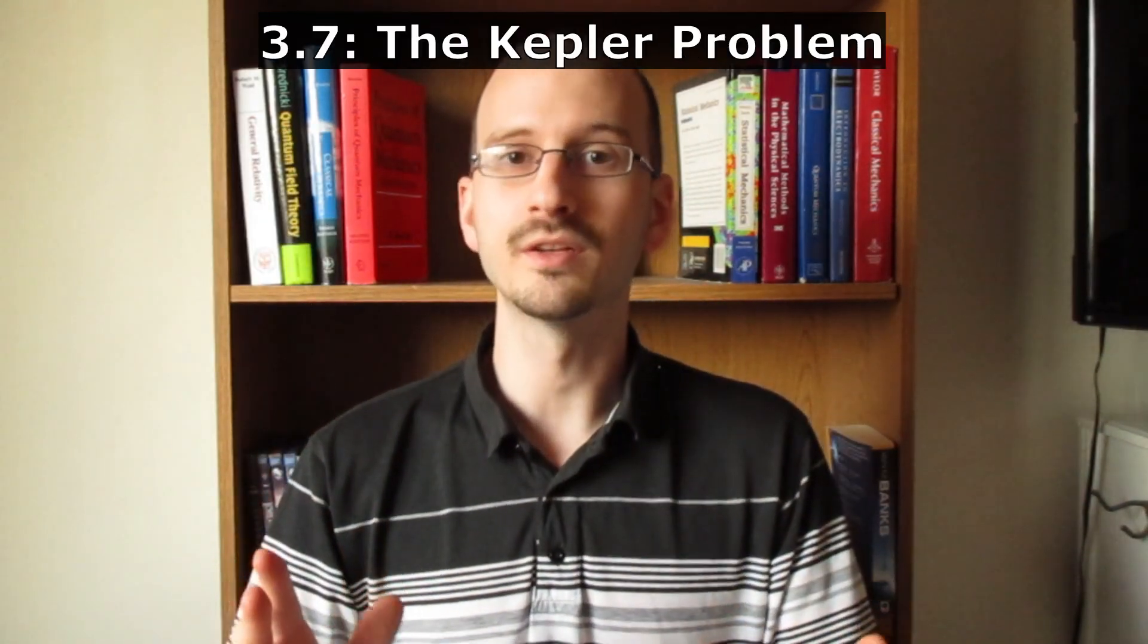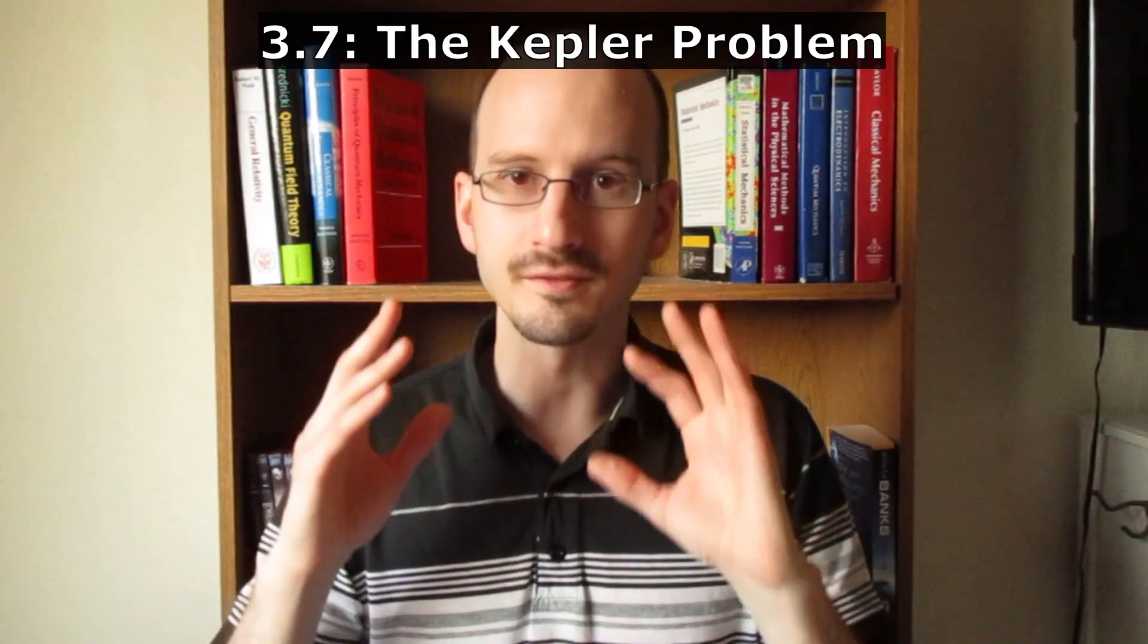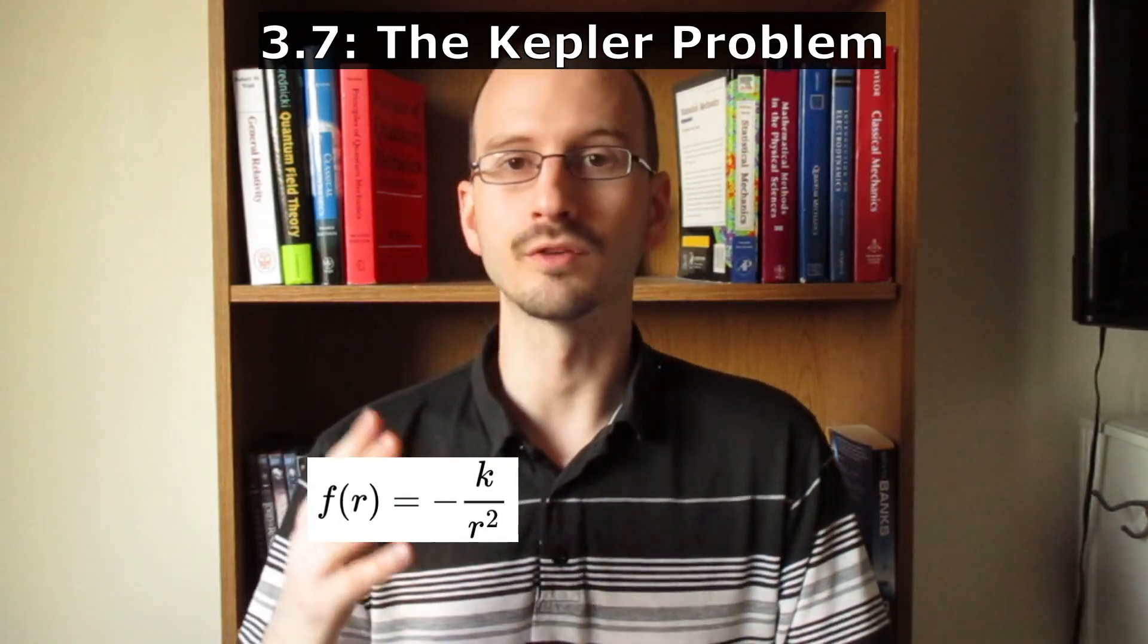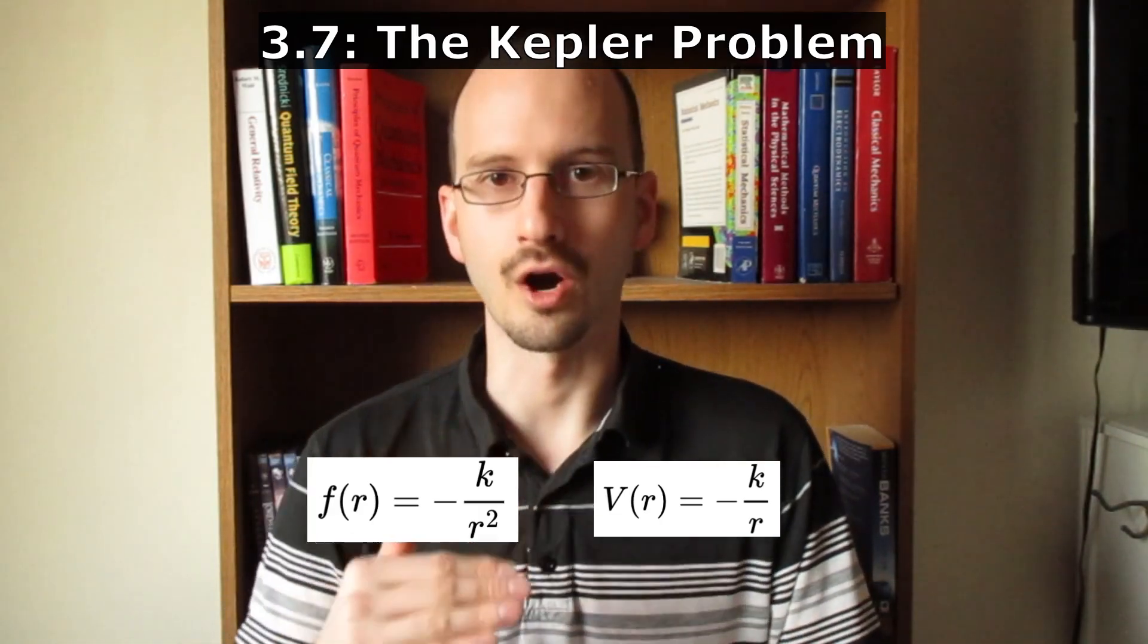In section 3.7, we look at the Kepler problem. Finally, we are zeroing in on the inverse square law, the forces of gravity and electrostatics that we're familiar with from our everyday lives. The force is equal to minus a constant over r squared, and the potential is equal to minus the constant over r.